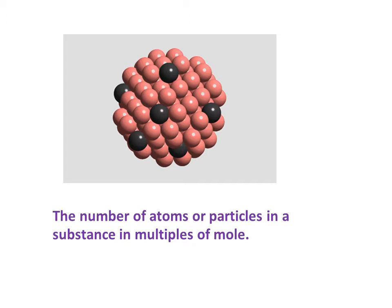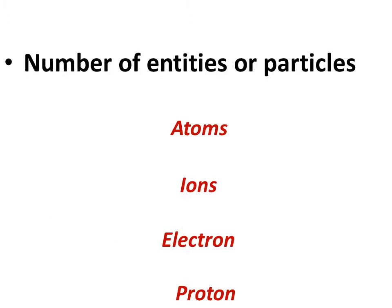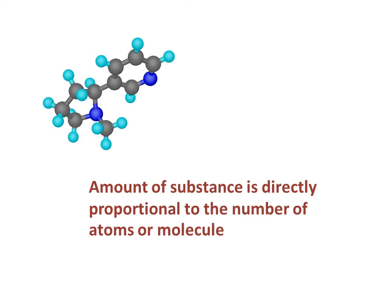Amount of substance is the measure of the number of entities or particles present in a substance. The entity may be an atom, a molecule, ion, electron, or a proton. Generally, the amount of substance is directly proportional to the number of atoms or molecules.